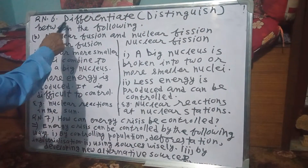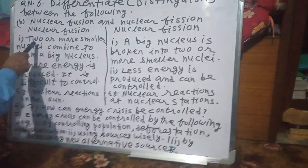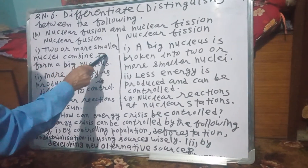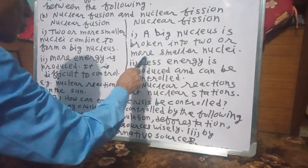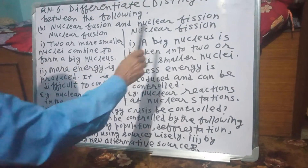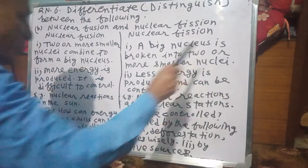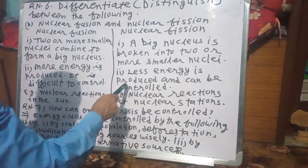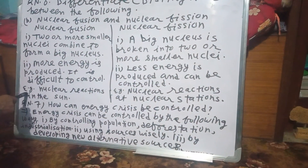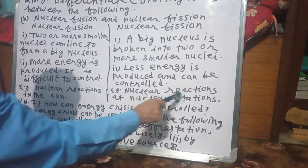Question number six(b): Differences between nuclear fusion and nuclear fission. Nuclear fusion: two or more smaller nuclei combine to form a big nucleus; more energy is produced; it is difficult to control. Example: nuclear reactions in the sun, which cannot be controlled by human beings. Nuclear fission: a big nucleus is broken into two or more smaller nuclei; less energy is produced and it can be controlled. Example: nuclear reactions at nuclear power stations, which can be controlled.